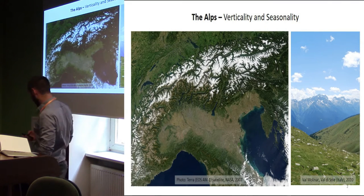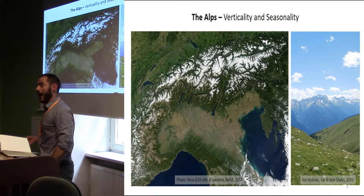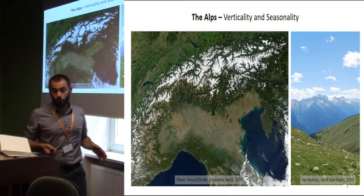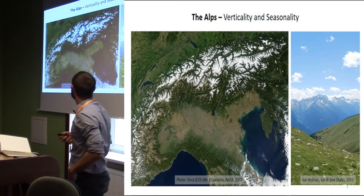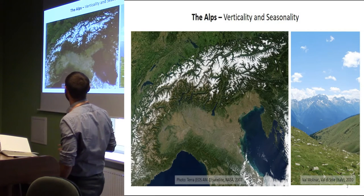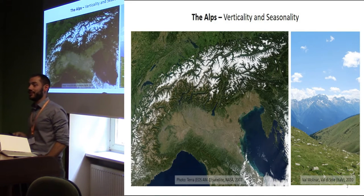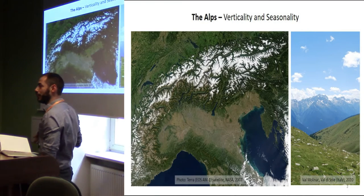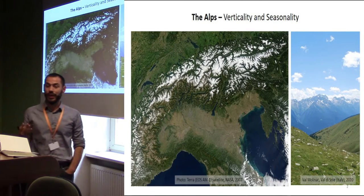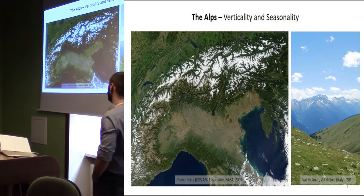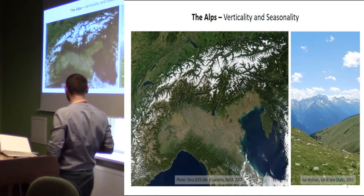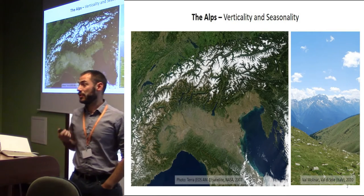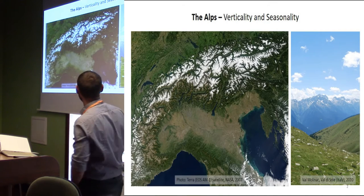I'm going to talk about dry stone structures in the Alps at high altitude. The Alps is probably one of the most important mountain chains in Europe, characterized by their verticality — altitude goes from zero meters above sea level to almost 5,000 meters. This verticality influenced the way human communities in prehistoric times interacted with the Alps.